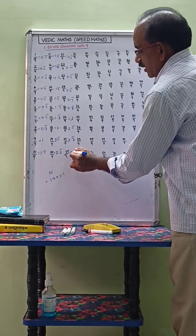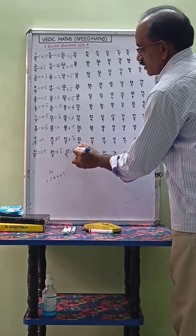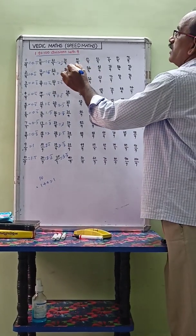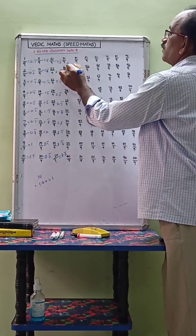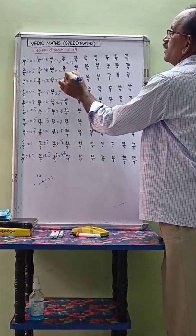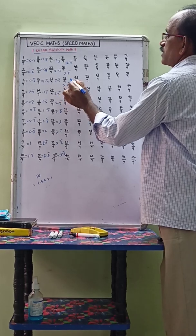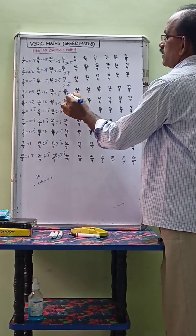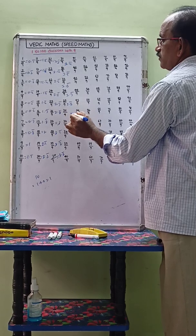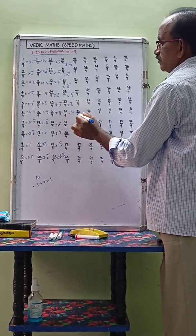30 by 9: sum of the digits equals 3, so 3.3 bar. 31 by 9 equals 3.4 bar. Next: 32 by 9 equals 3.5 bar. 33 by 9 equals 3.6 bar. 34 by 9 equals 3.7 bar. 35 by 9 equals 3.8 bar. 36 by 9 equals 4.